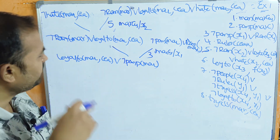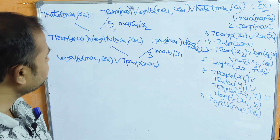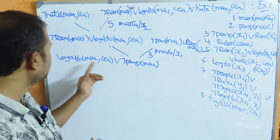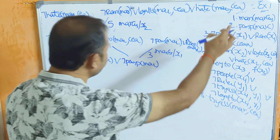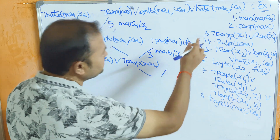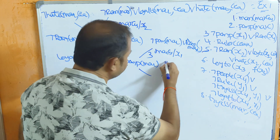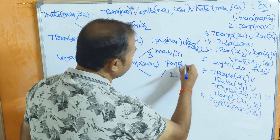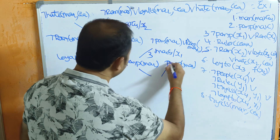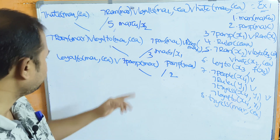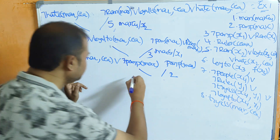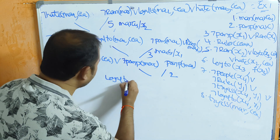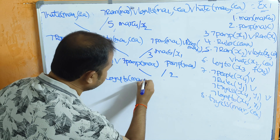Now we need to select a parent clause containing either pompeian(marcus) or negation loyal_to(marcus, caesar). Observing the second clause, we have pompeian(marcus). Cancelling pompeian(marcus) with negation pompeian(marcus), the resolvent is: loyal_to(marcus, caesar).